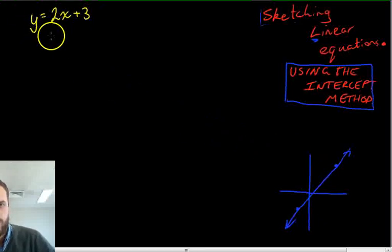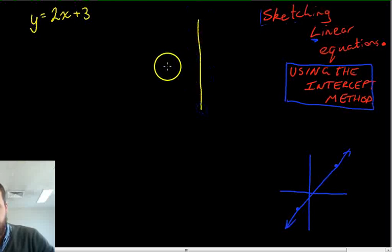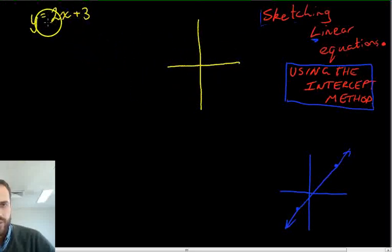Here's our equation, y equals 2x plus 3. And we're going to sketch that onto this Cartesian plane. First of all, to sketch something we're going to need two points.